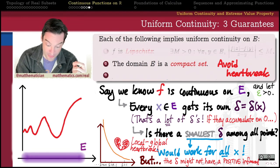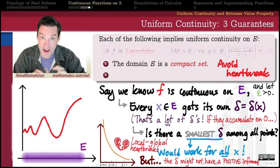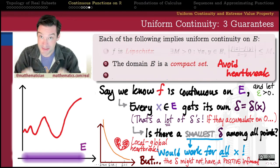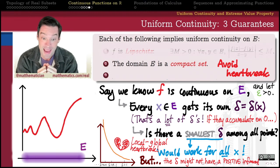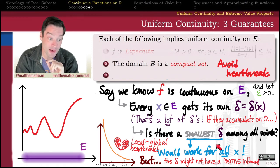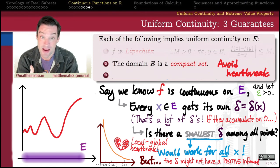And the idea behind the proof is going to be to use that cover finiteness property. That even though every x is going to get its own delta, we will be able to show that there's only finitely many of those x's and therefore finitely many of those deltas that are really necessary to cover all of what happens on my domain. And since there's only a finite number of positive deltas to pick from, that finite set of deltas will have a smallest delta that we can pick. And that smallest delta that we can pick is going to be one that works for all x's across the entire domain.